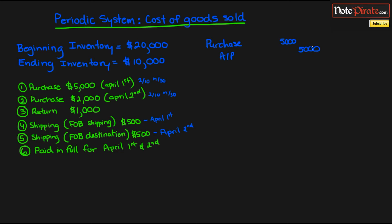Purchases is like an inventory account — that's why we debit it. And when we have the second purchase, it will be for $2,000. Always keep note that we have 2/10, net 30, which means a 2% discount if we pay within 10 days, and we have April 1st and April 2nd as the purchase dates. We have a return for $1,000, so we're going to do a reversing entry where accounts payable is going to be reduced by $1,000.